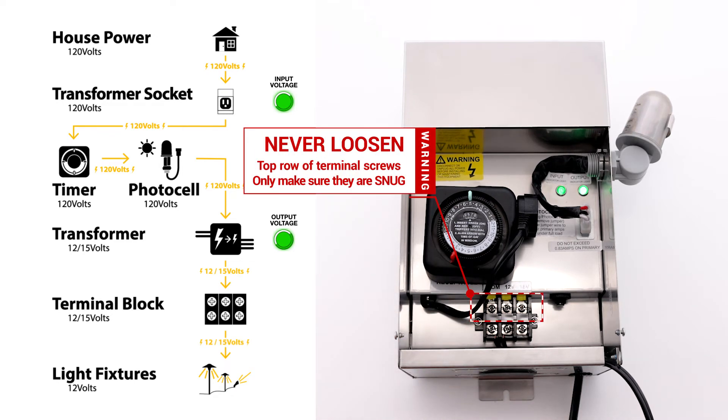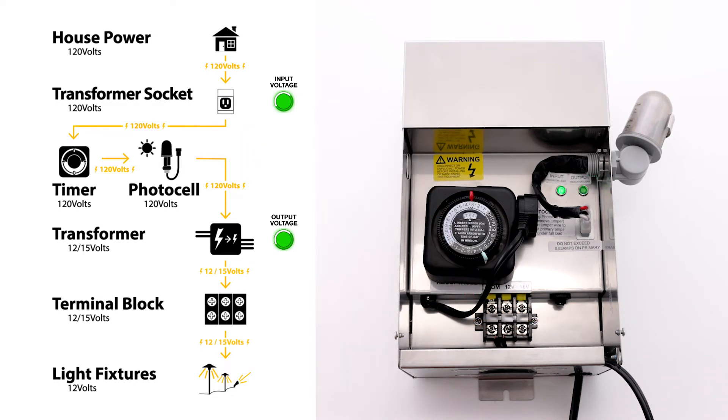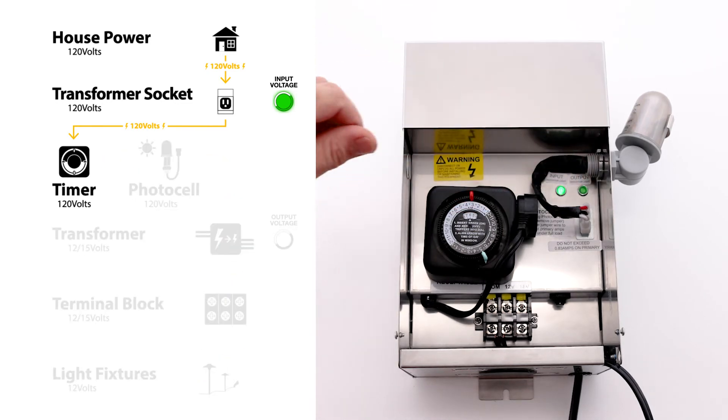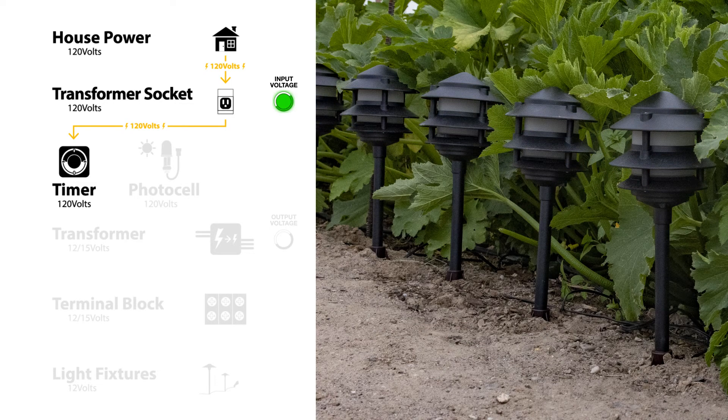And because you set the timer to turn off at 3 a.m., the timer will switch the transformer off as well as the second indicator light and all your landscape lighting fixtures.